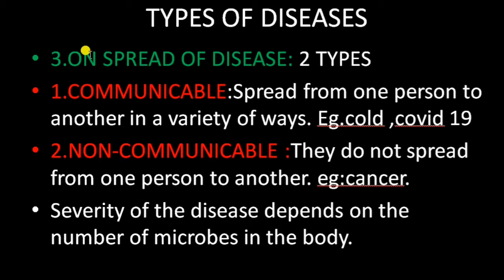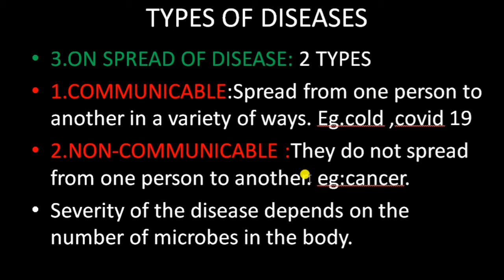Depending on the spread of disease, diseases are of two types: communicable diseases and non-communicable diseases. Communicable diseases, also known as contagious diseases, spread from one person to another — from an affected person to a healthy person. Non-communicable diseases do not spread from one person to another. Example: cancer.